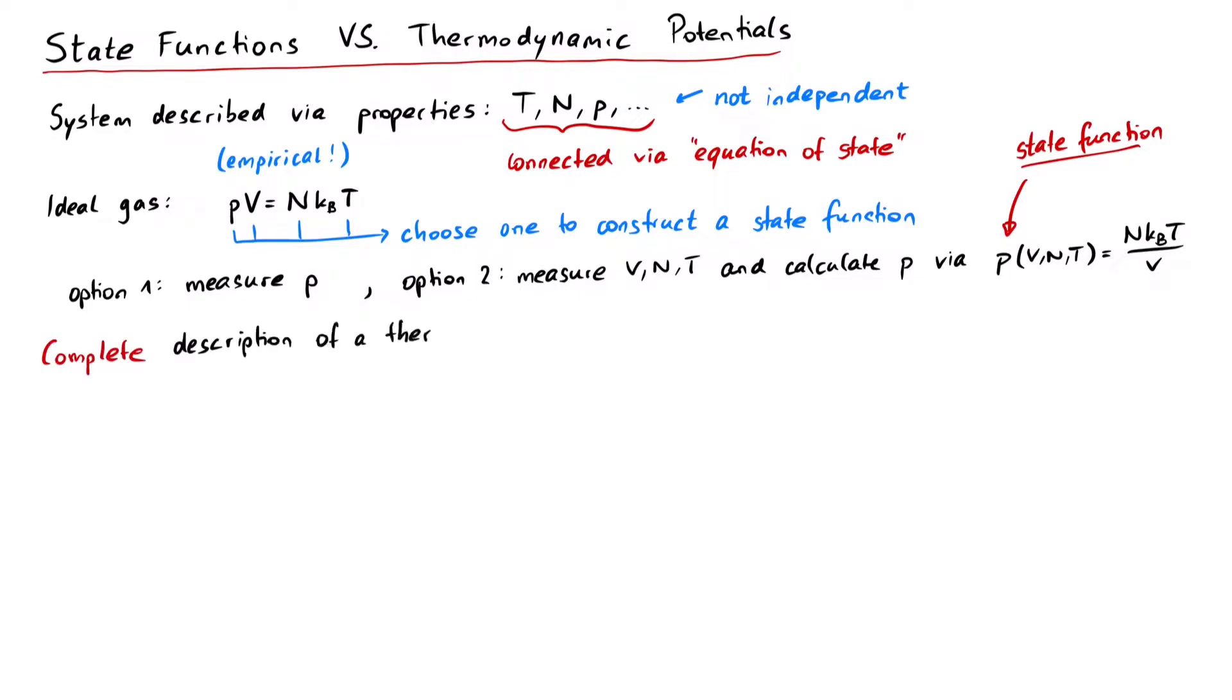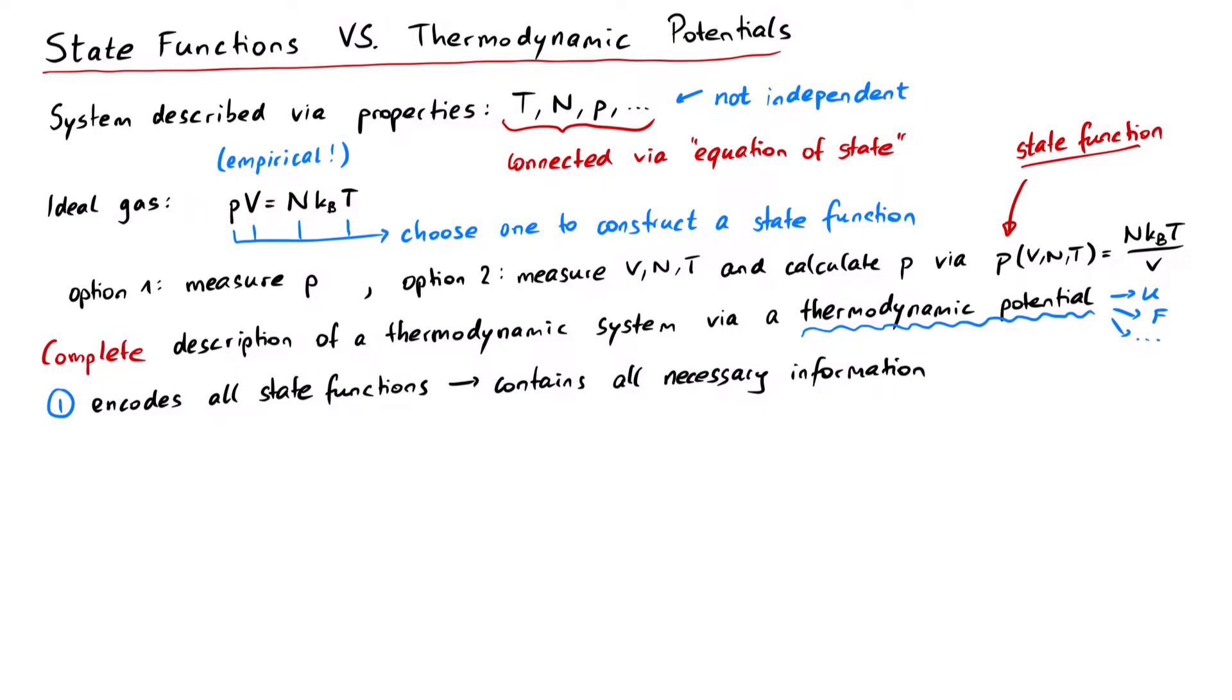The complete description of a thermodynamic system is given by a thermodynamic potential. This could be the internal energy U, free energy F, or a similar potential. A thermodynamic potential has some really interesting properties. It encodes all state functions of a system, that is all relations between our physical properties, therefore it contains all necessary information.